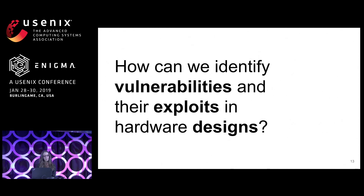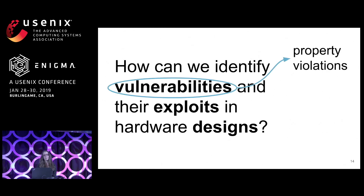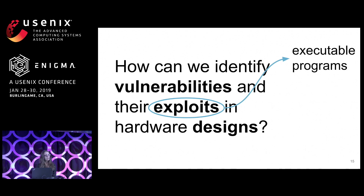The question we are asking ourselves is: how can we identify the vulnerabilities and their exploits in hardware designs? There is no simple answer, but it starts with first identifying the properties that are critical to security — that if violated would represent an exploitable vulnerability. Second, we need to analyze the potential consequences to security if a property is violated, so that we can better understand the extent to which security may be compromised by any given bug.